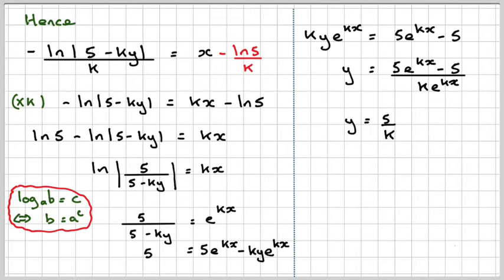If we now write this as 5 e to the kx over ke to the kx, this will just become 5 over k, and then we're going to just have minus 5 over ke to the kx.